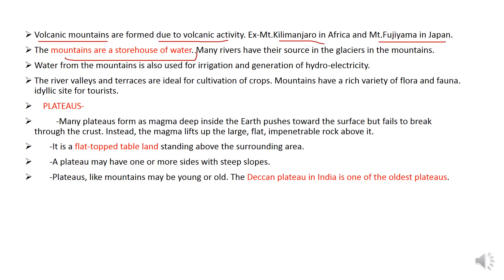Mountains are the storehouse of water. Many rivers have their origin in the glaciers in the mountains. Water from the mountains is used for irrigation and the generation of hydroelectricity. River valleys and terraces are ideal for the cultivation of crops. Mountains also have a rich variety of flora and fauna and are an ideal site for tourists.